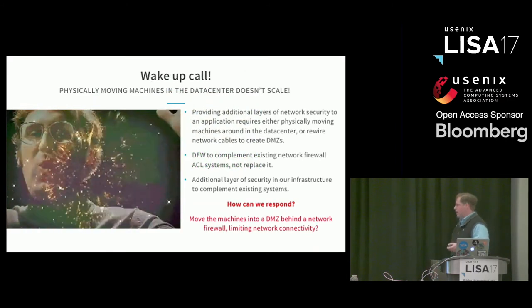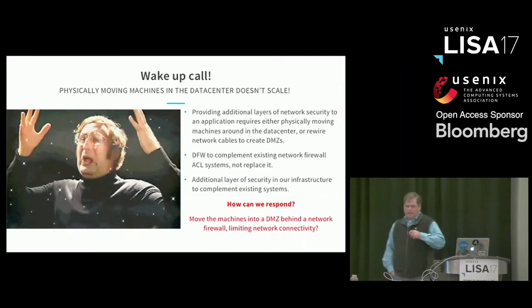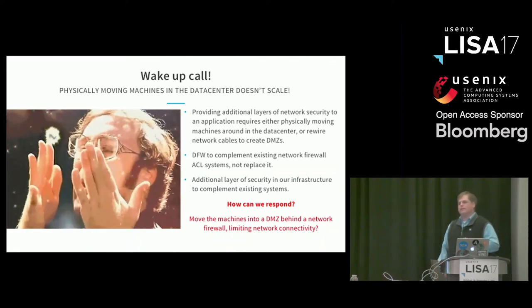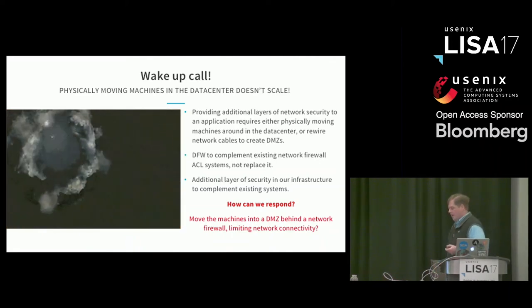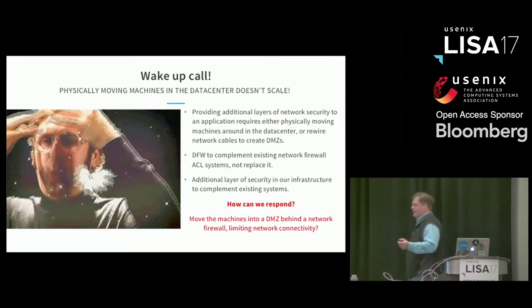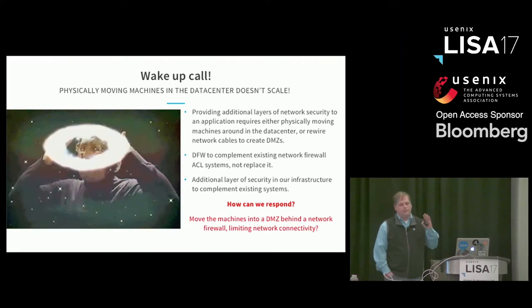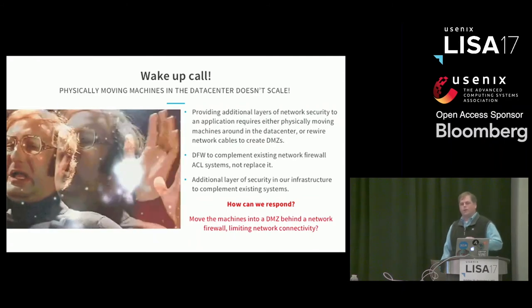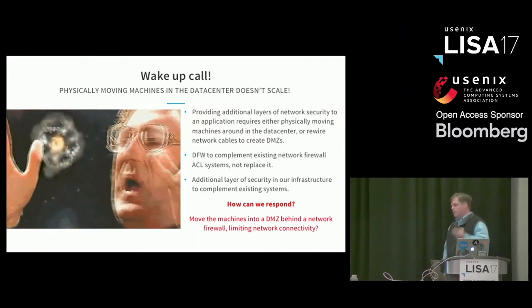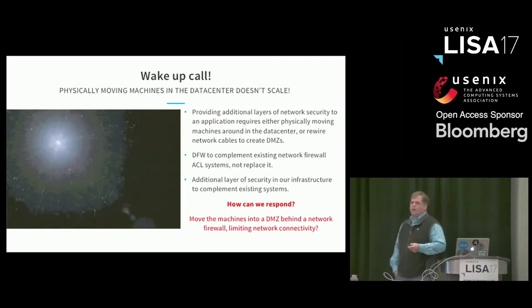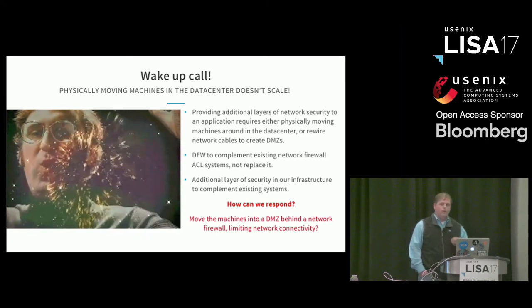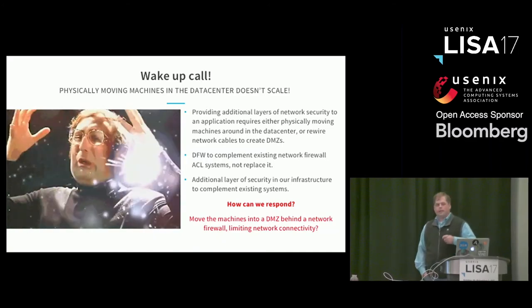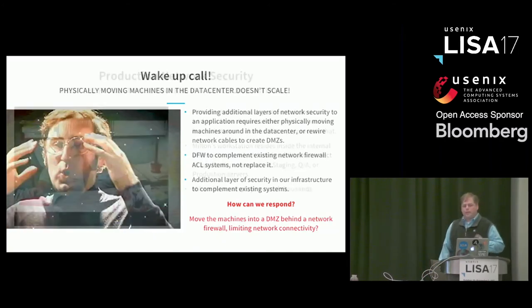This was a huge wake-up call for us. Let's say I had an application with 500 or 1,000 different instances, and our security team came to us and said we need to provide isolation for this application. Our only response was to create a DMZ — put the machines behind a network firewall. This either meant unracking and re-racking machines in the data center, physically changing how they were connected to the network, re-running cabling. This did not scale. This may be one application out of thousands at LinkedIn, and we just can't do this.